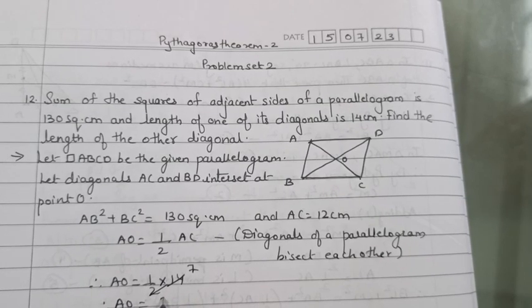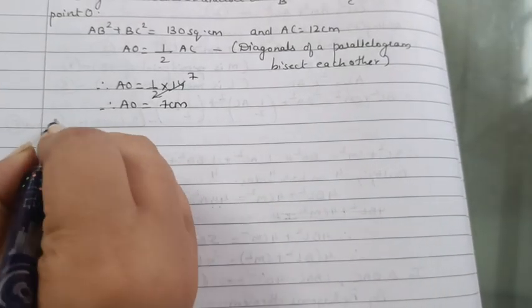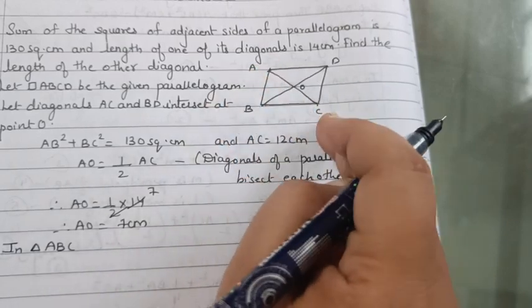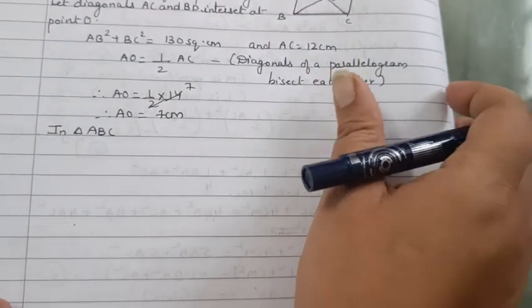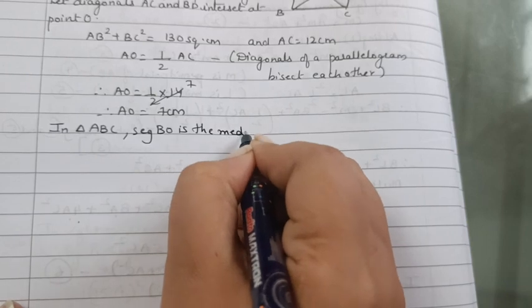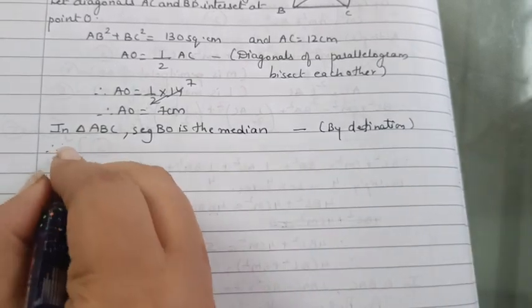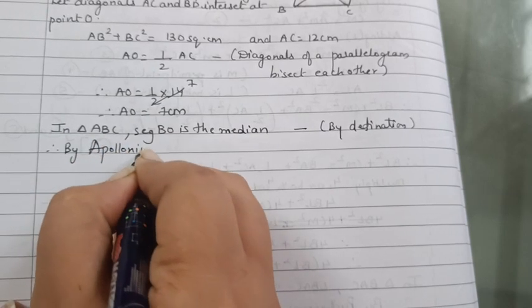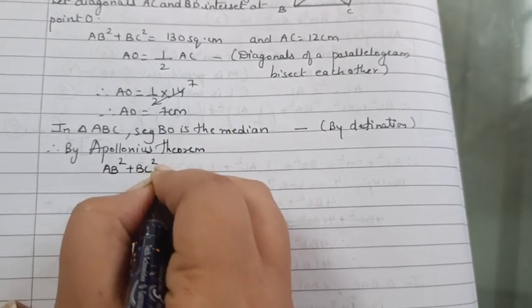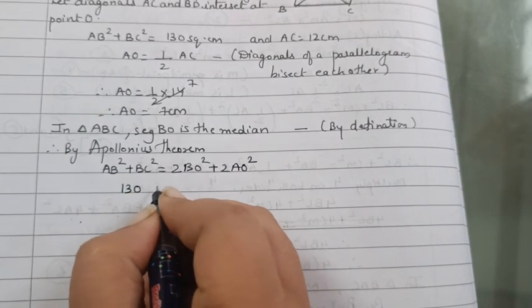So now therefore AO is equal to half into 14, that's 7. Therefore AO equal 7 cm. This much is clear to you all. So now in triangle ABC, segment BO is the median. So by definition, by Apollonius theorem,